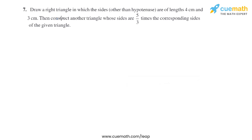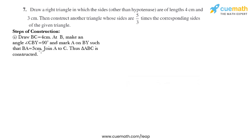Question 7 of this exercise says: draw a right triangle in which the sides other than the hypotenuse are of lengths 4 centimeter and 3 centimeter, then construct another triangle whose sides are 5/3 times the corresponding sides of the given triangle. So let's start with the steps of construction. We need to draw BC equal to 4 centimeter. At B, make angle CBY equal to 90 degrees. Mark A on BY such that BA equals 3 centimeter. Join A to C, and thus triangle ABC is constructed.